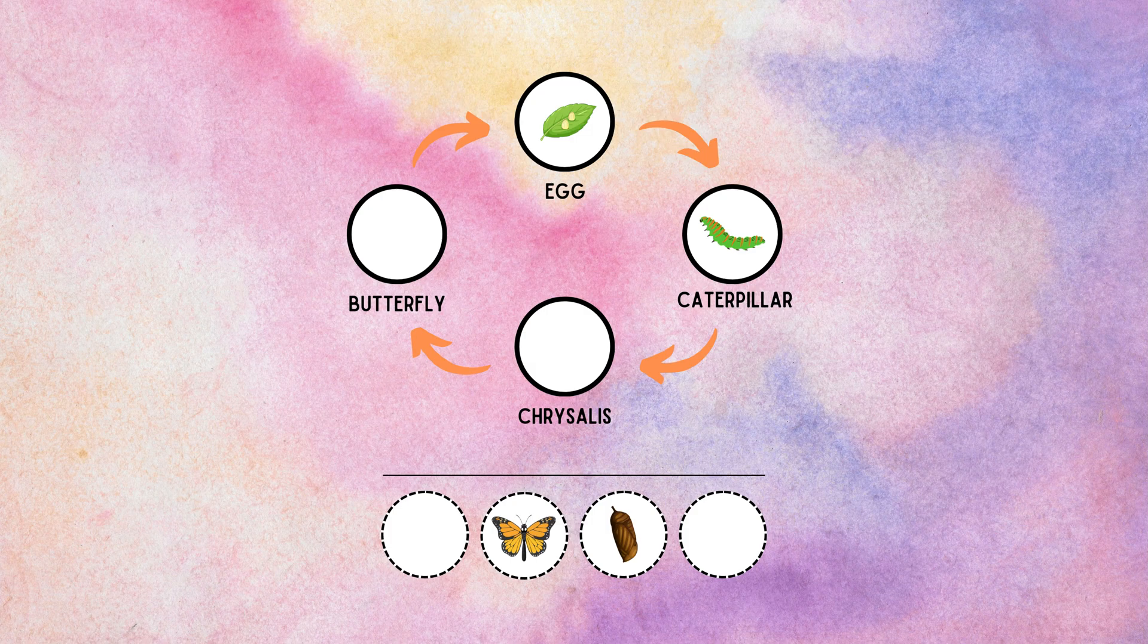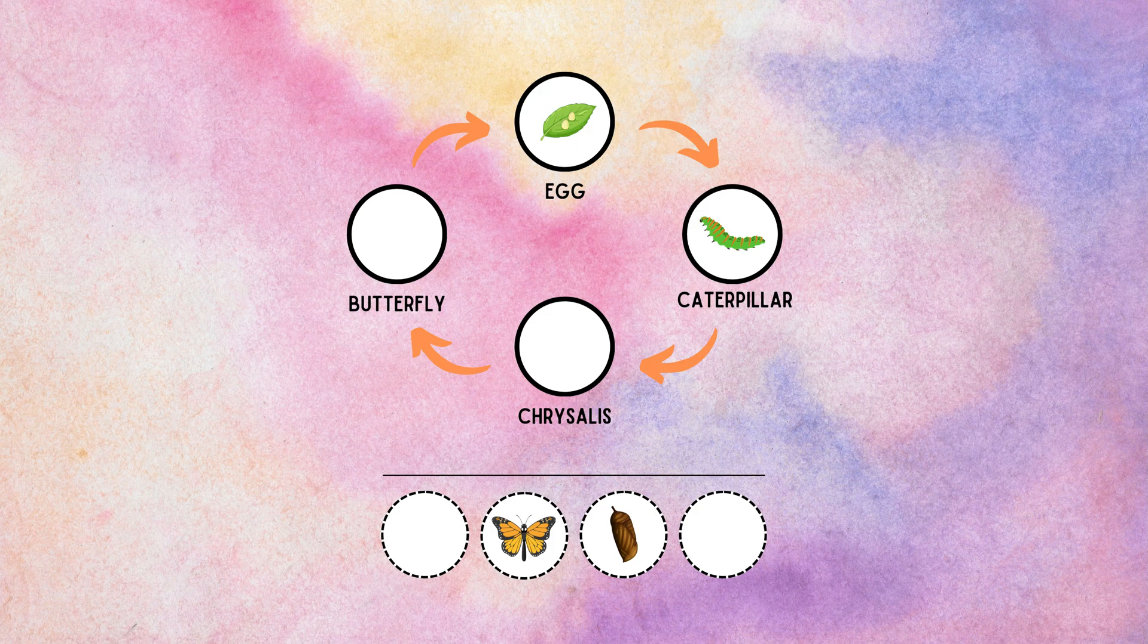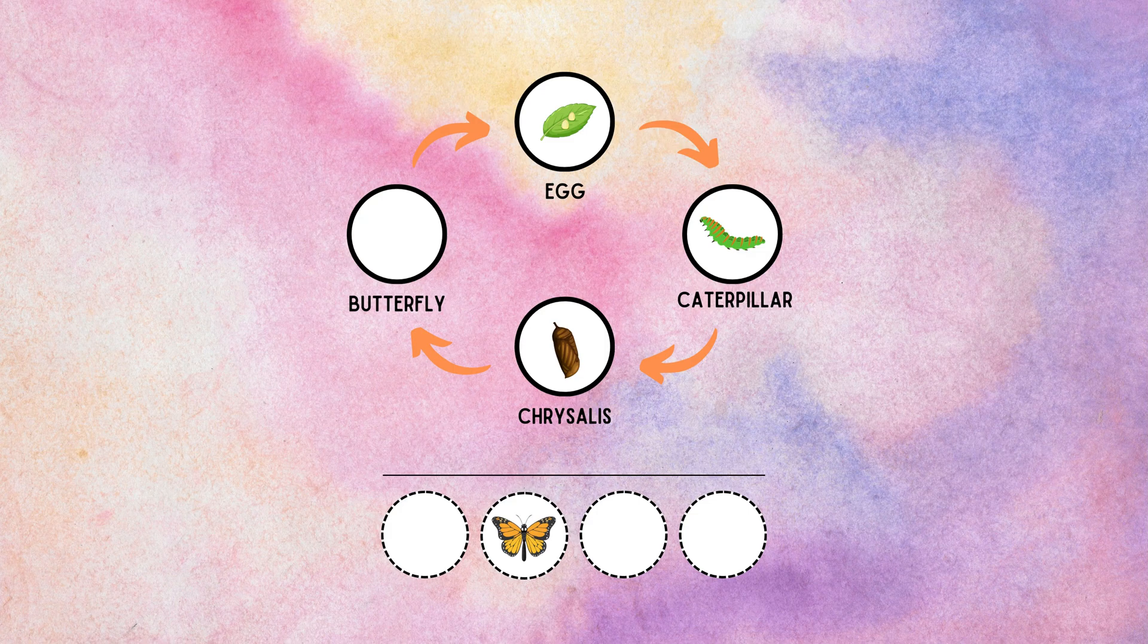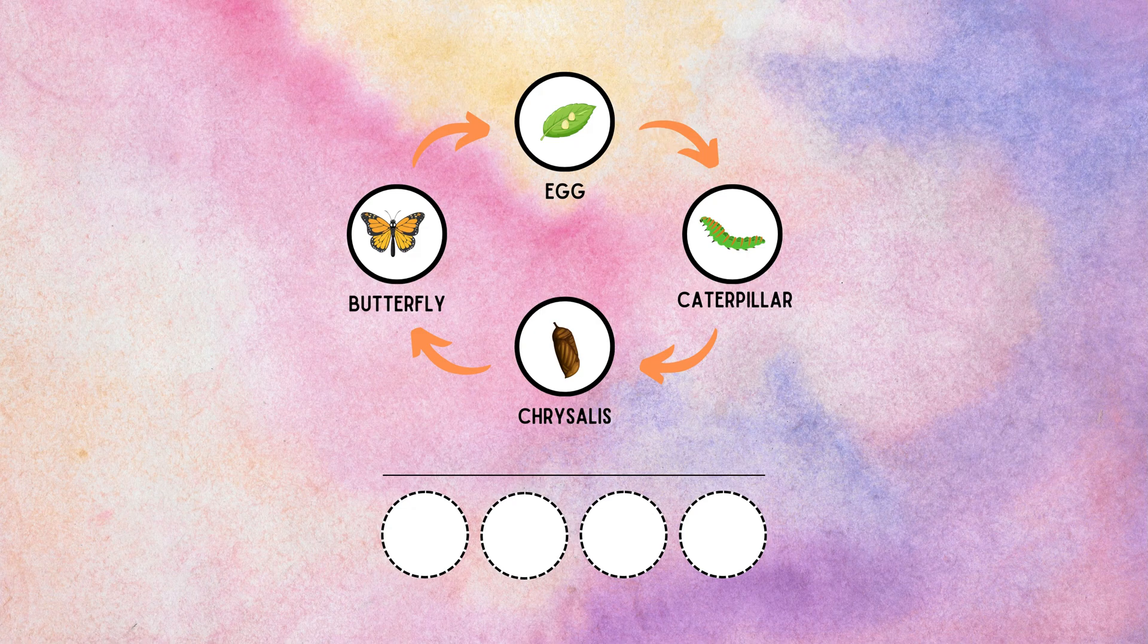The caterpillar stage is where most of the feeding and growth occur. Once the caterpillar has reached a certain size and maturity, it undergoes a remarkable transformation inside a protective casing called a chrysalis or pupa. After a period of time, typically a few weeks, the adult butterfly finally emerges from the chrysalis. This emergence process is called eclosion.